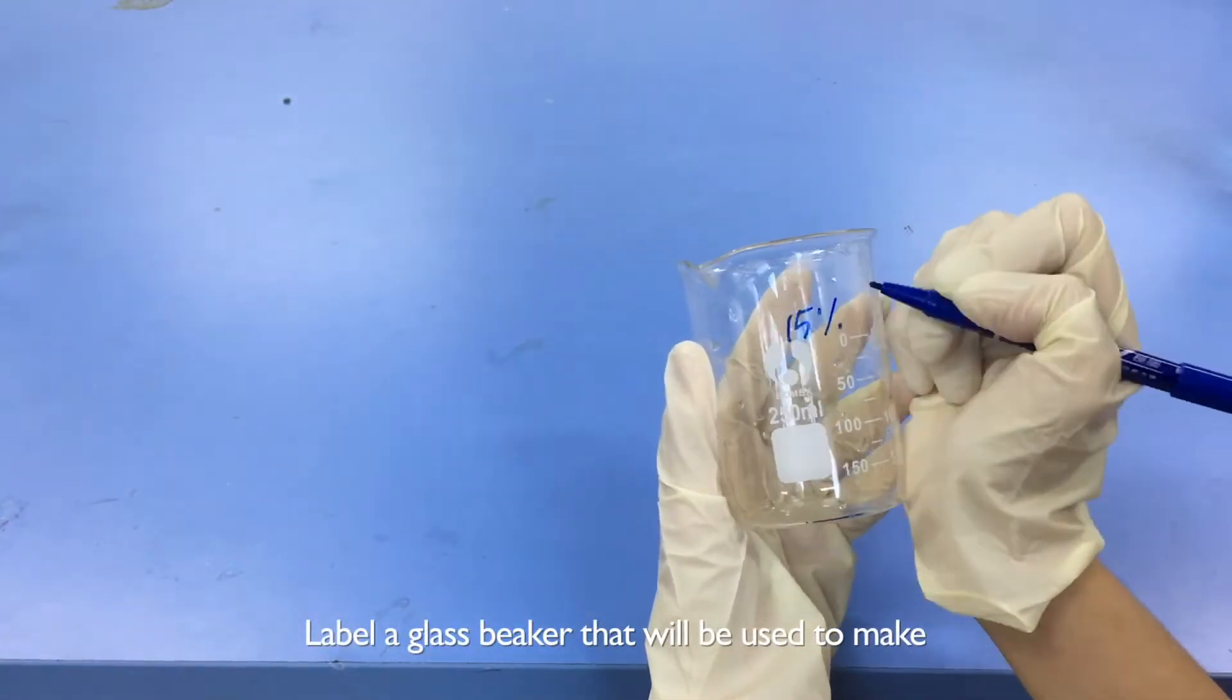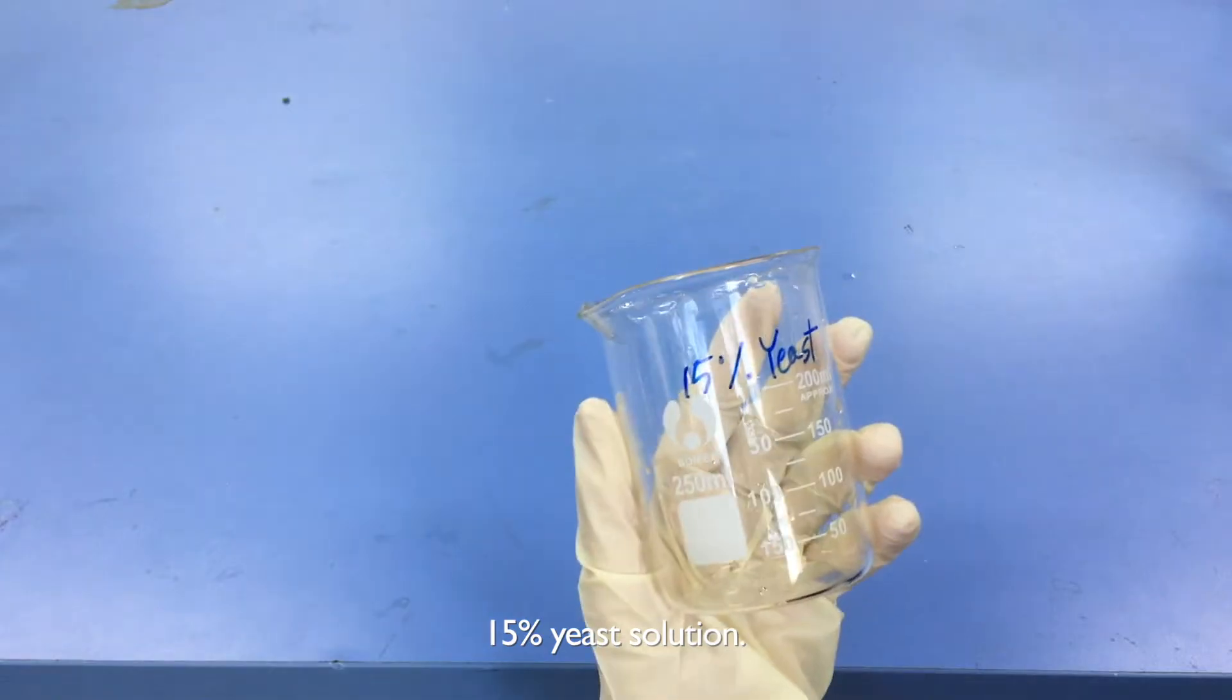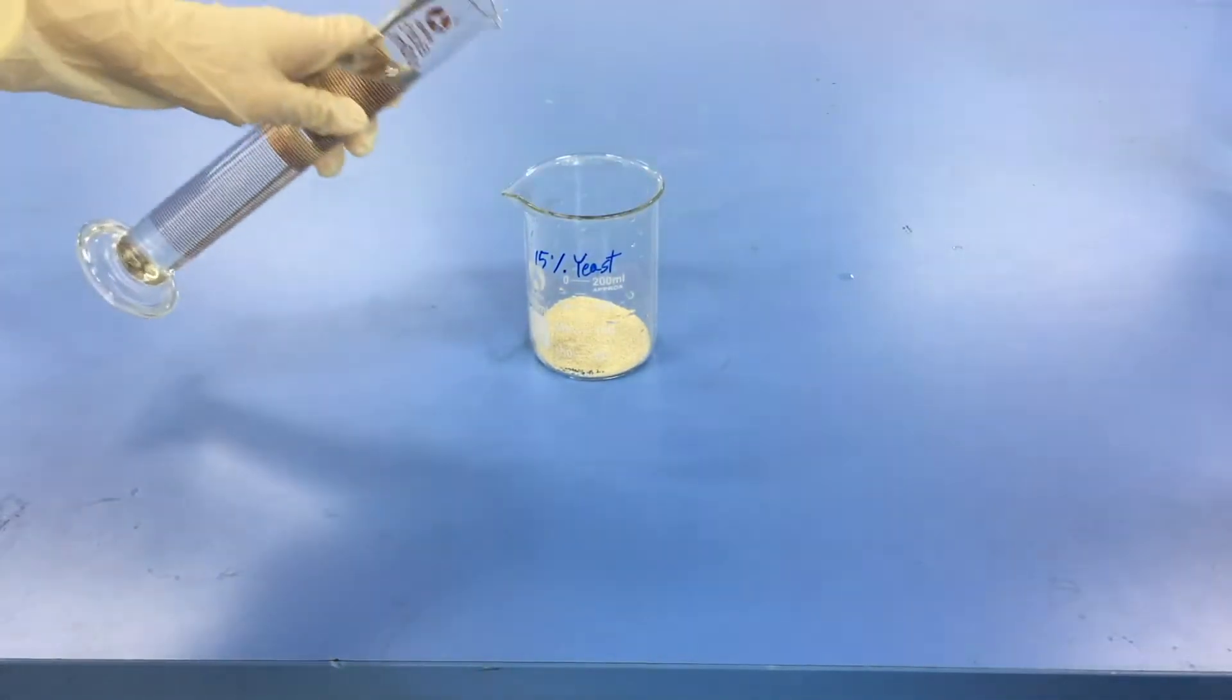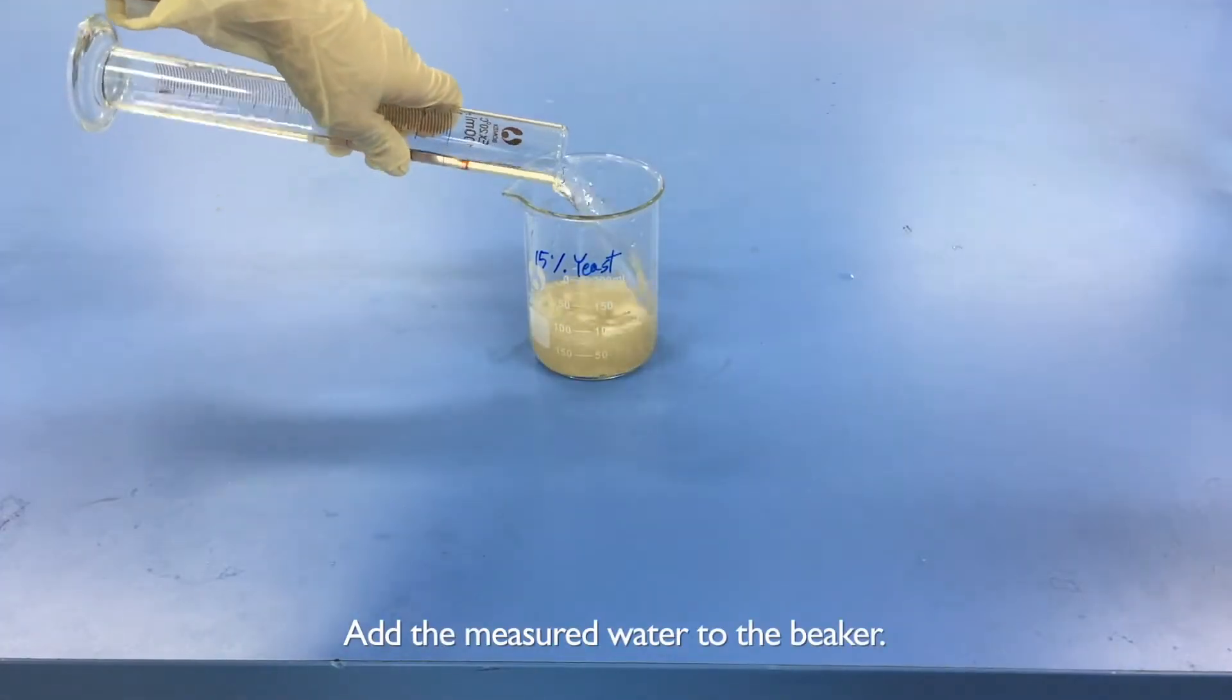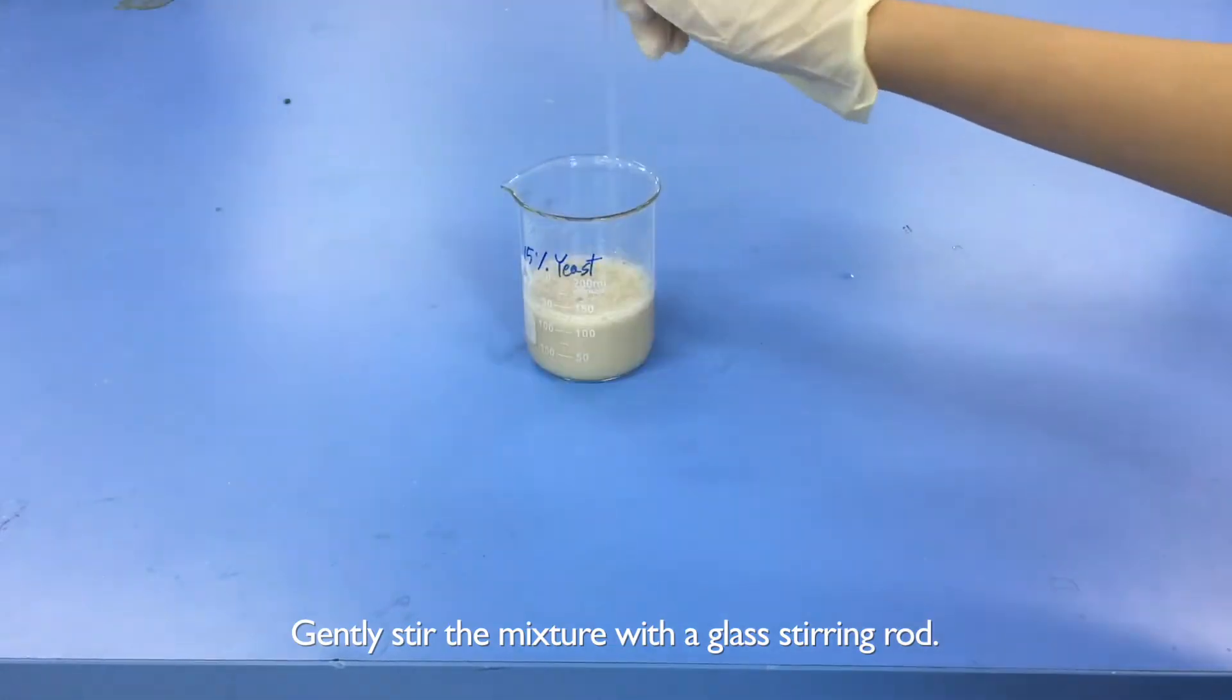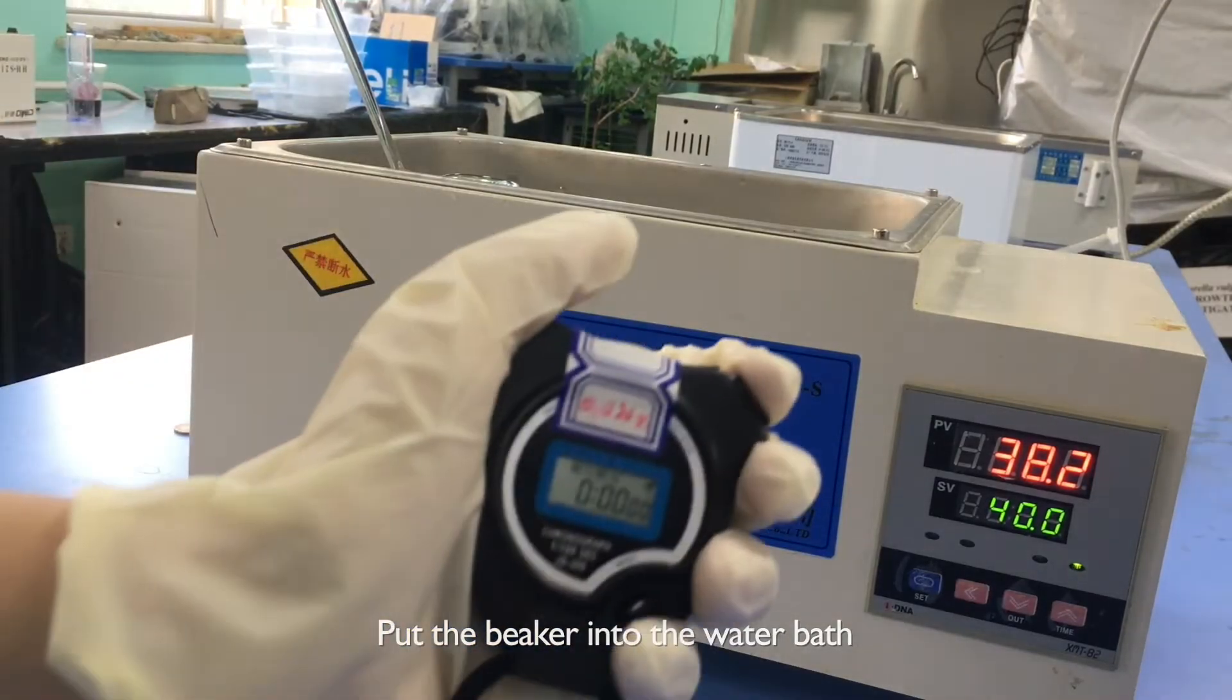Label a glass beaker that will be used for the 15% yeast solution. Pour 15 grams of instant dry yeast into the glass beaker. Add the measured water to the beaker. Gently stir the mixture with a glass stirring rod. Put the beaker into the water bath.